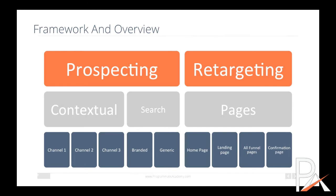Here's the framework: for prospecting we have contextual channels — channel one, two, three — which are things likely to help find new users for the AB Killer. With search, we'd use branded terms like 'AB Killer' and generic terms like 'ab machines' or 'ab equipment.' On the retargeting side, we target the home page — anyone visiting is at least somewhat interested — and always place a pixel there. We then want to take them to the landing page.